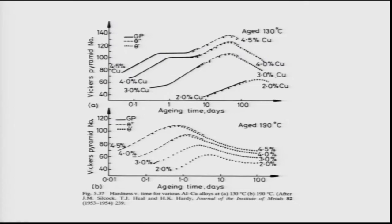Peak hardness refers to the maximum on the hardness-time curve: hardness starts low, increases to a maximum, then decreases again. At 130 degrees Celsius, the time to achieve peak hardness for alloys with 3 to 4.5 weight percent copper does not change significantly.